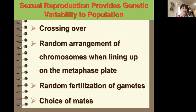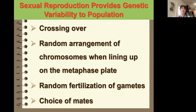You need to be able to explain how each of these promotes variation: how crossing over works, how random arrangement of chromosomes — independent assortment — works, and random fertilization. Even your choice of mates matters — that's why it's not good to reproduce with someone genetically close to you, like a cousin, because it doesn't promote variability.